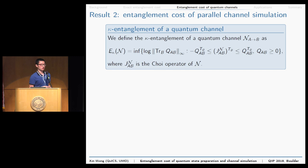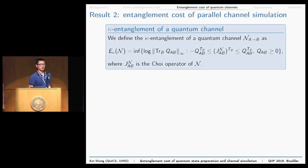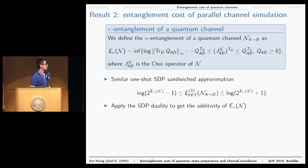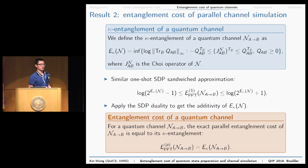Our second result gives a solution for the parallel entanglement cost. Our key tool is the kappa entanglement of a quantum channel. It is in the same spirit as the state version, but the quantum state is replaced by the Choi matrix of the quantum channel, and the objective function changes to the spectral norm of the partial trace of operator Q_AB. This quantity can also be computed by semidefinite programming. We obtain the result that for any quantum channel, the exact parallel entanglement cost equals its kappa entanglement.